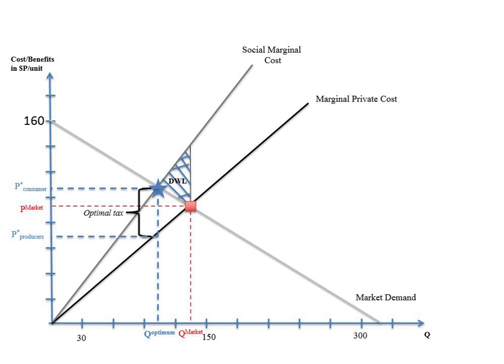This results in a competitive market equilibrium price of P market. In the presence of a negative production externality, the private marginal cost increases, i.e. shifted upwards to the left by marginal damages to yield the marginal social curve.